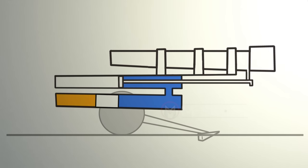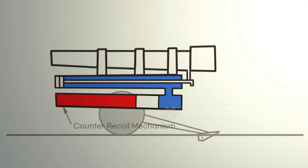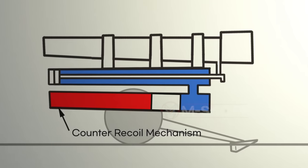The cannon assembly, which has been moved backwards, has to be brought back to its original place, and the part that serves this function is called counter recoil mechanism.